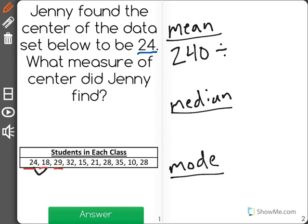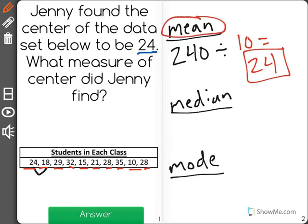So I see 1, 2, 3, 4, 5, 6, 7, 8, 9, 10. And 240 divided by 10 is 24. So, it looks like 24 is the mean. Now, I'm just going to go through and find the median and mode to make sure those aren't 24 as well.